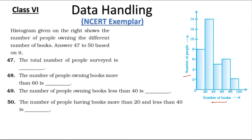Question 47: The total number of people surveyed. We need to add up each entry: here we have 8, here we have 14, here we have 5, next is 6, next is 2. When we add all these we get 35, so 35 people are surveyed.